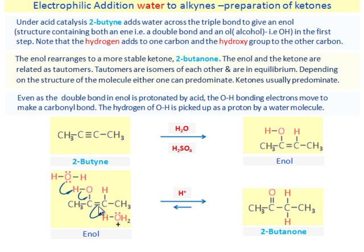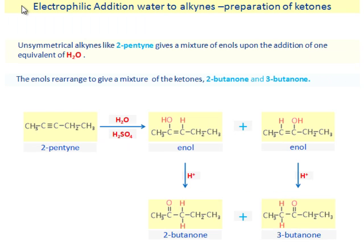Even as the double bond in the enol is protonated by acid, the OH bonding electrons move to make the carbonyl bond. The hydrogen of OH is picked up as a proton by a water molecule. Unsymmetrical alkynes like 2-pentyne give a mixture of enols upon the addition of one equivalent of water. The enols rearrange to give a mixture of ketones, 2-pentanone and 3-pentanone.